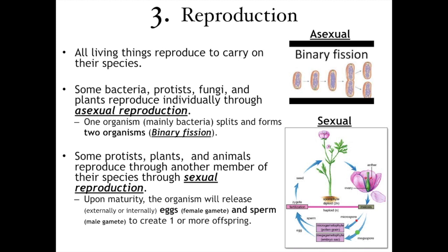Number three is reproduction. There are two types of reproduction in which a living organism makes another living organism. There's asexual reproduction — that means you do not need a mate. The bacterial cell will go through either binary fission or budding. Binary fission is an equal splitting — one bacteria splits into two bacteria. Remember, fusion is two coming into one. Binary fission is the opposite of that — it's making two. Budding is an uneven splitting, where a little bump comes out of the original organism.